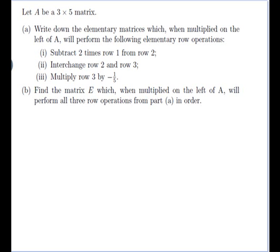Let A be a 3 by 5 matrix. Write down the elementary matrices which, when multiplied on the left of A, will perform the following elementary row operations: 1. Subtract 2 times row 1 from row 2. 2. Interchange row 2 and row 3. And 3. Multiply row 3 by minus a fifth. Part B: Find the matrix E which, when multiplied on the left of A, will perform all three row operations from part A in order.